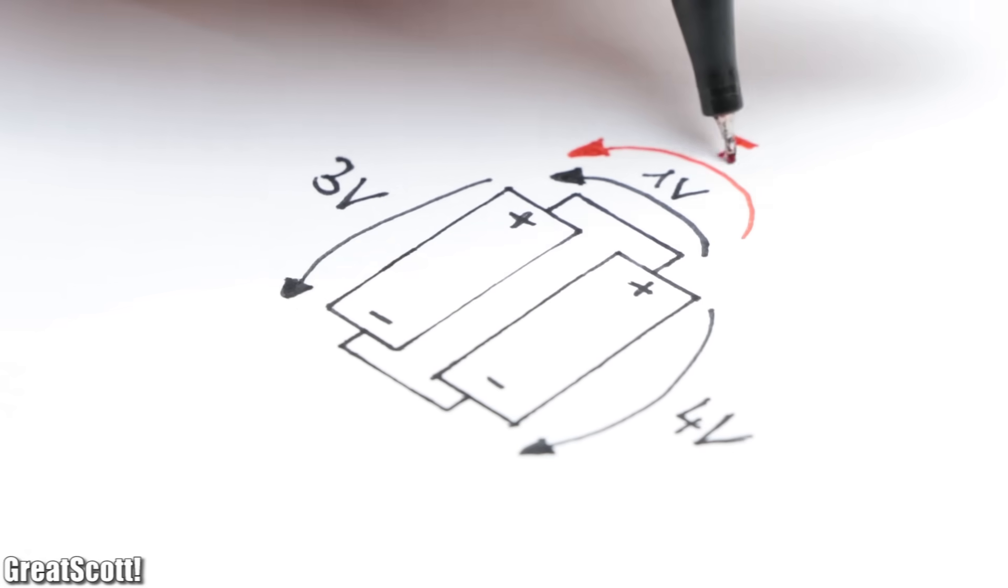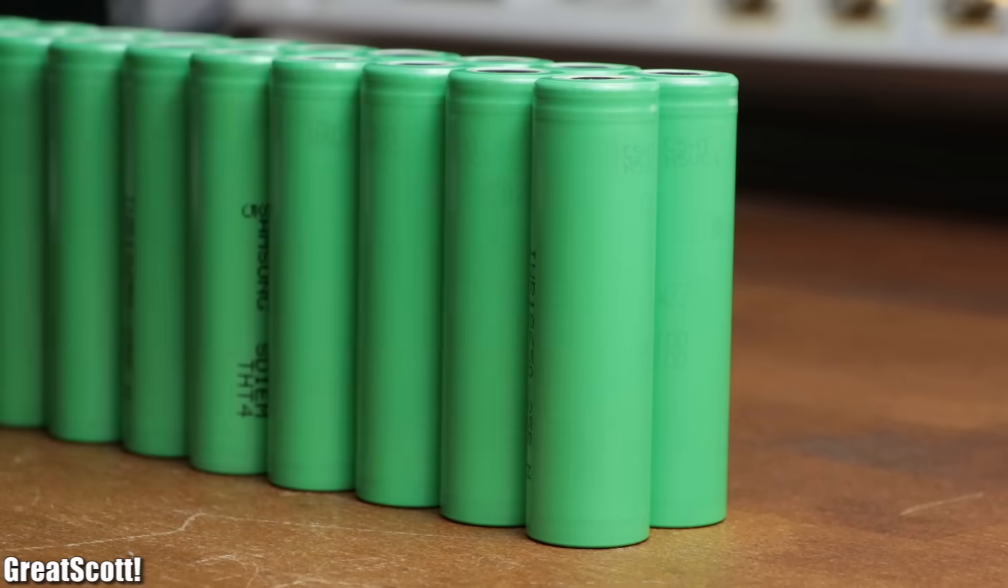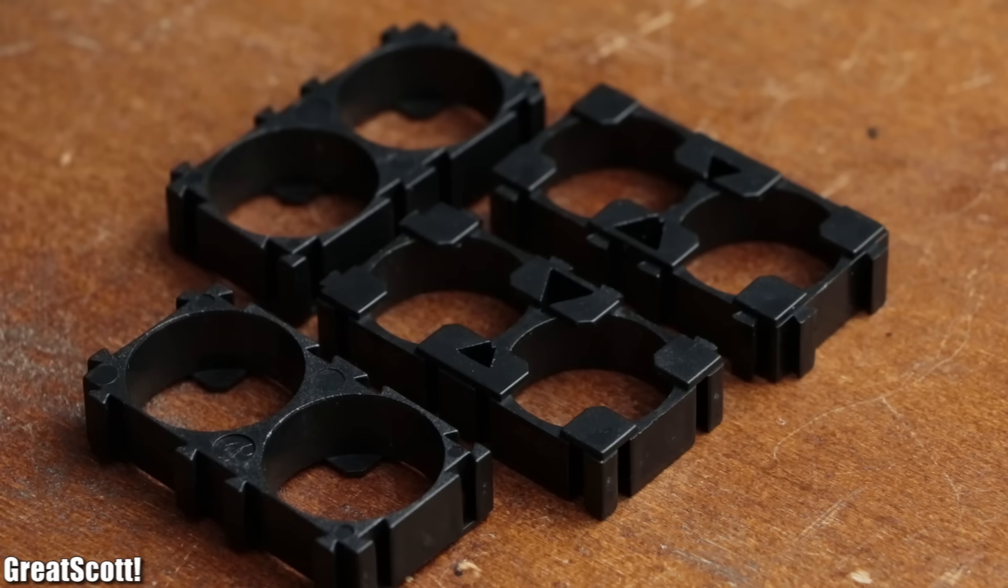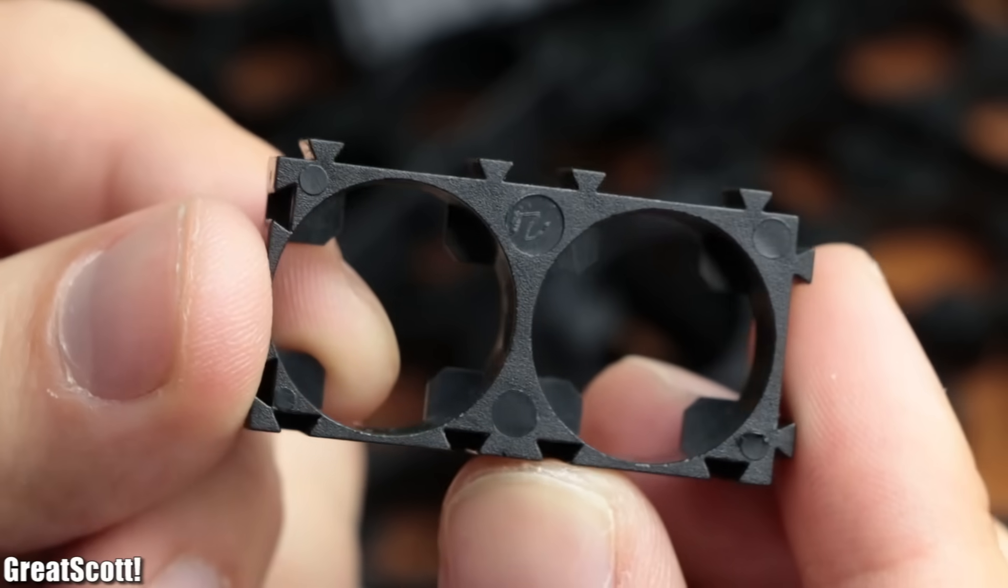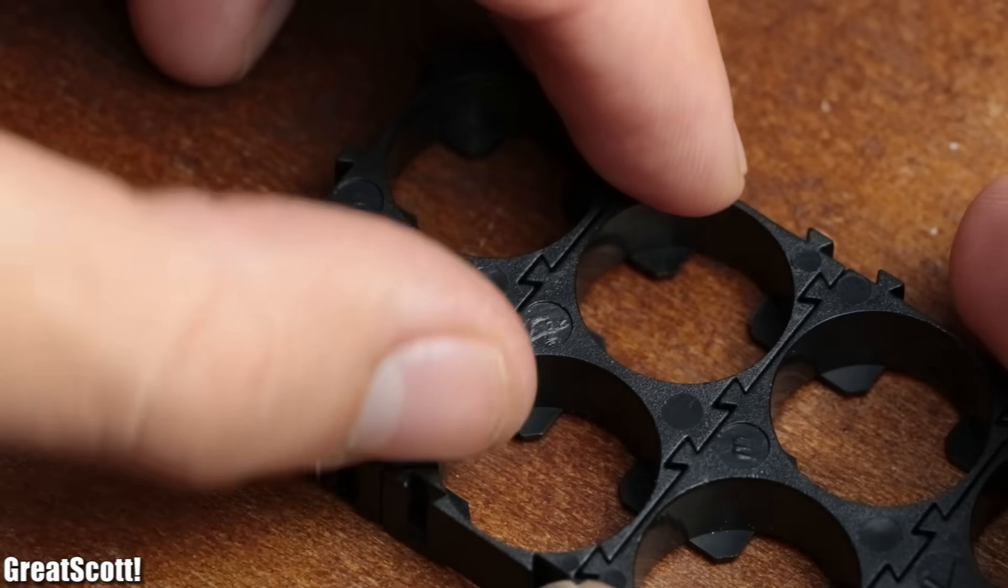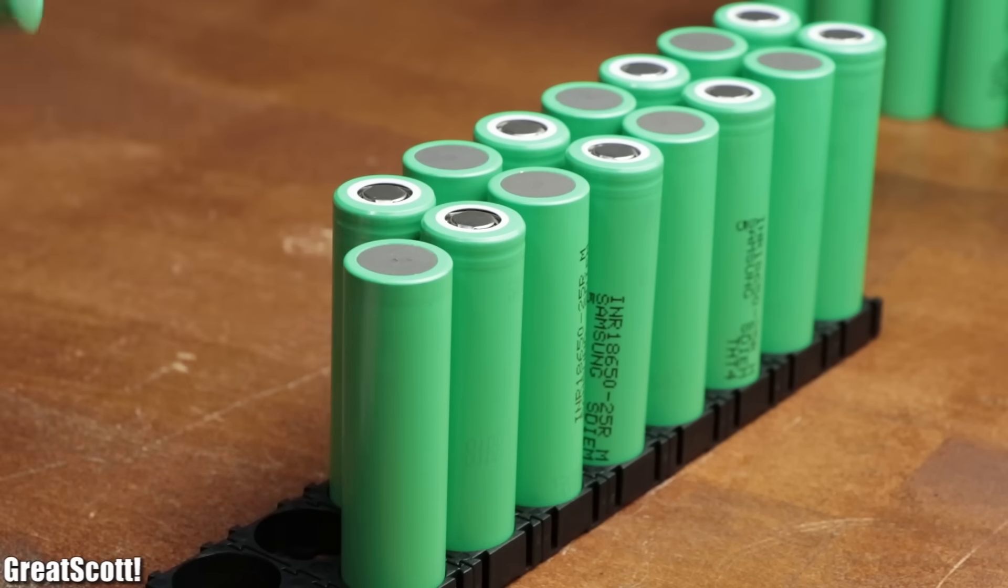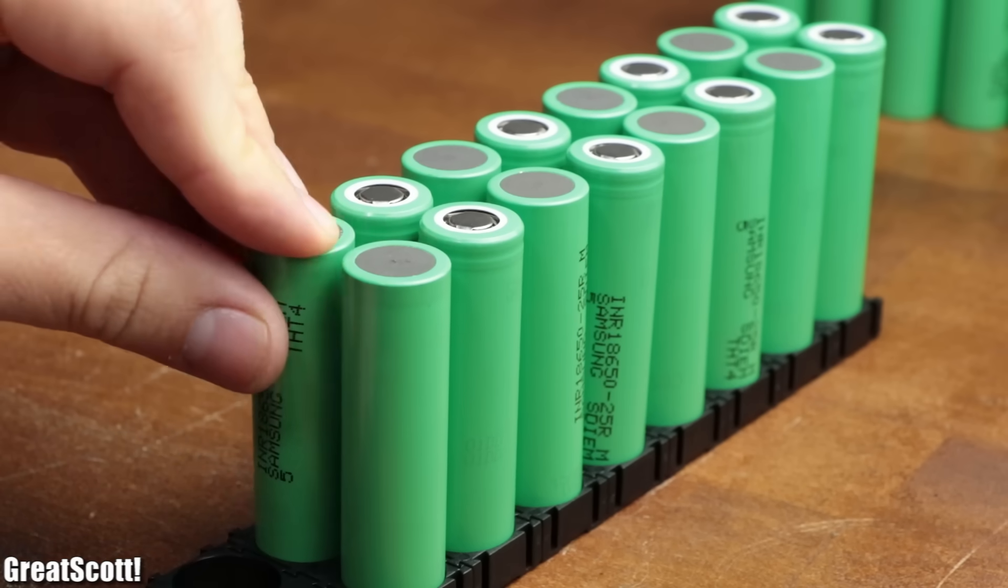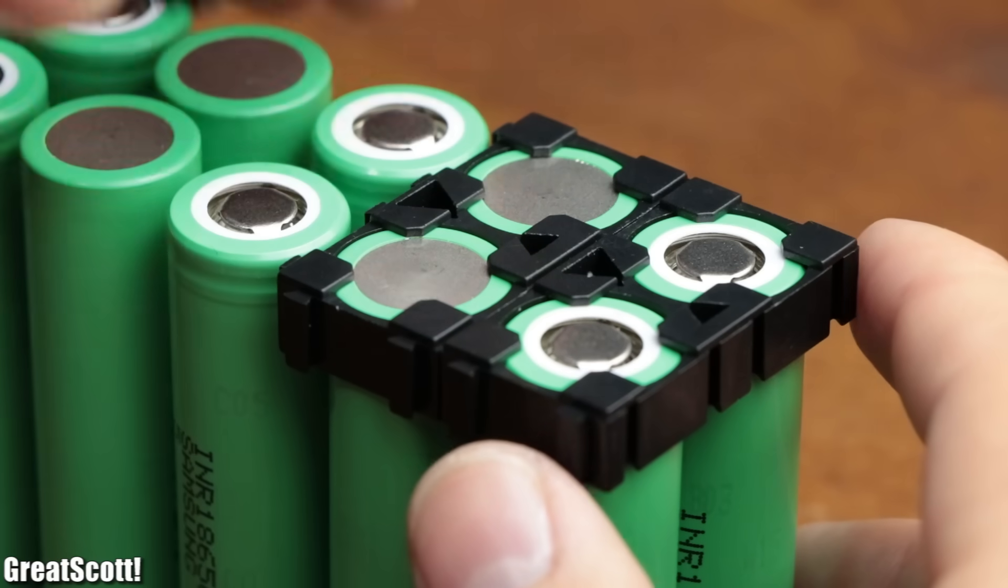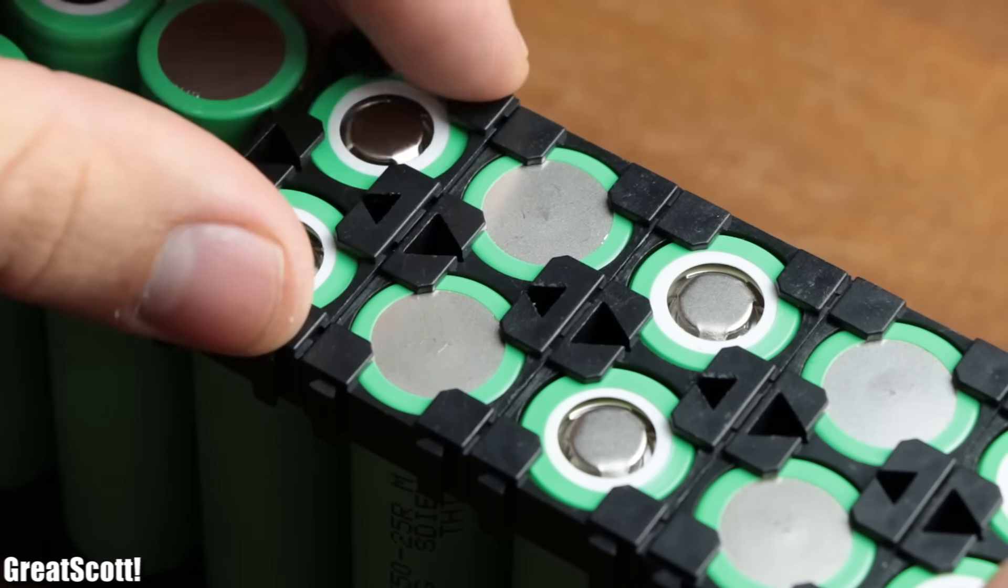But anyway, to turn 26 of those cells into a nice looking battery pack, I will be utilizing those plastic spacers which can hold two cells each. So I connected 13 of them in series through the help of the interlocking system, placed two batteries with the same orientation in the first row, and altered the orientation of the next two cells continuously while filling up all the spacers. Once that was done, I added the remaining spacers to the top of the battery pairs and connected them as well through their interlocking system.